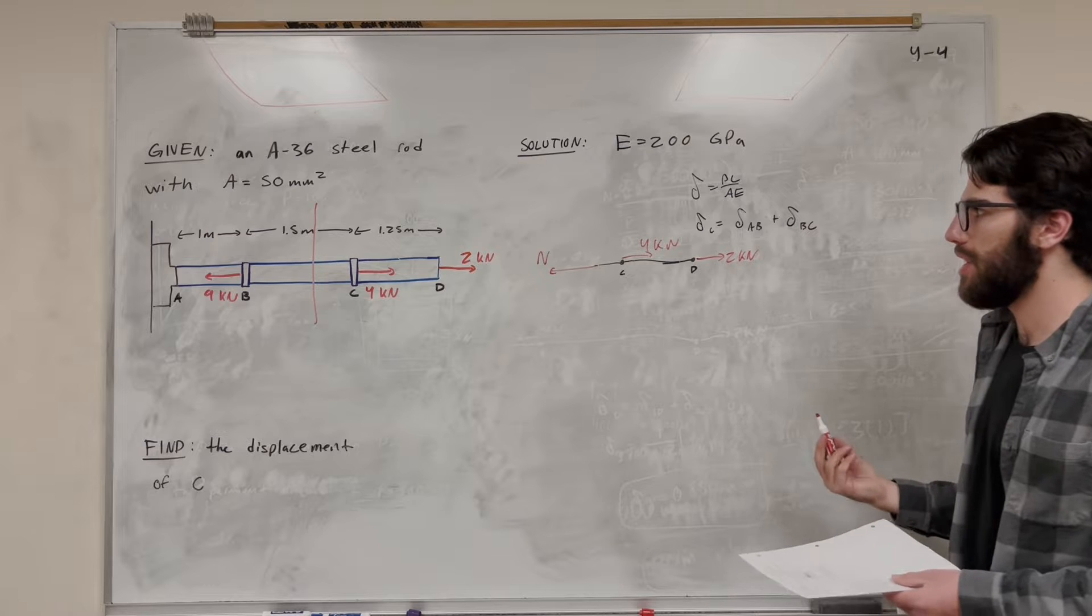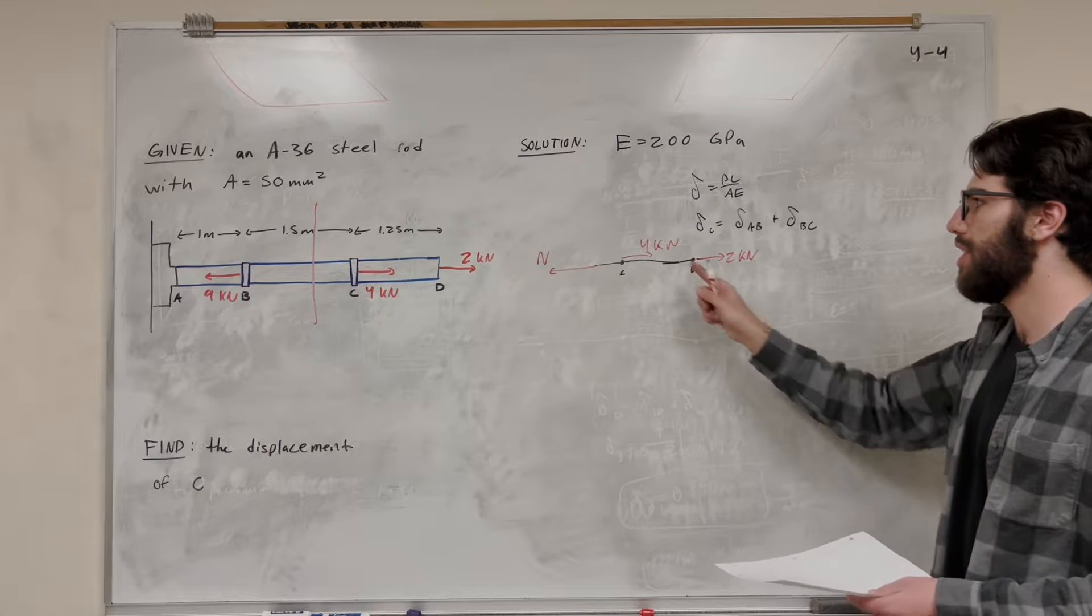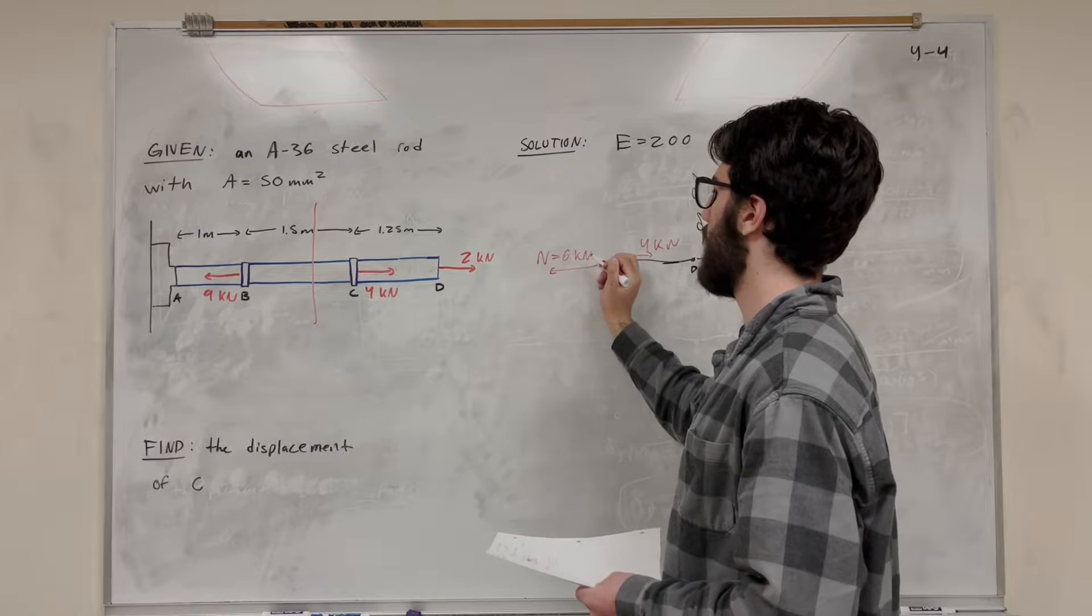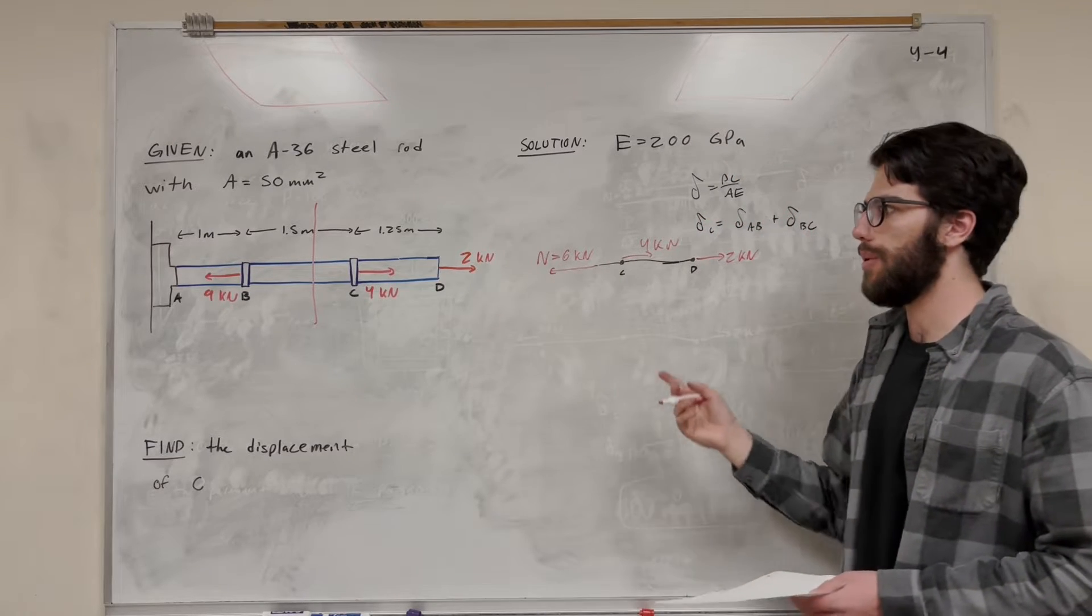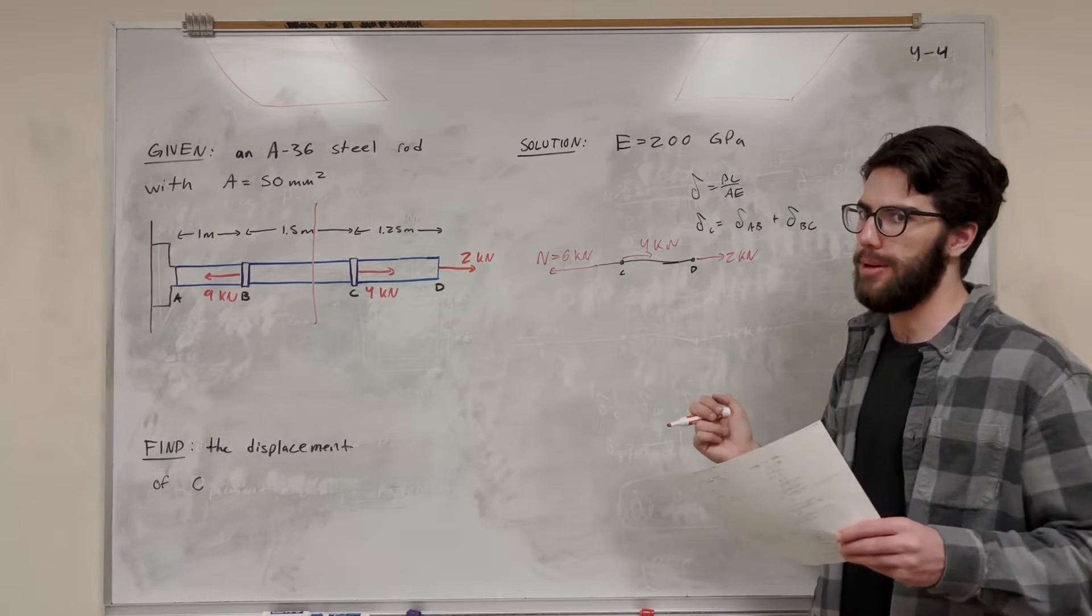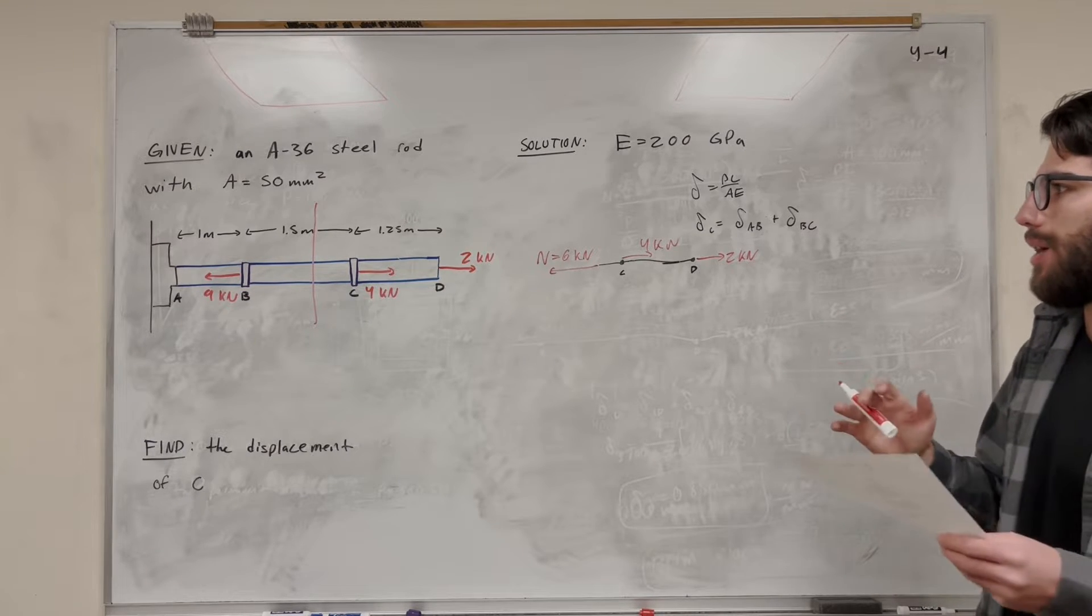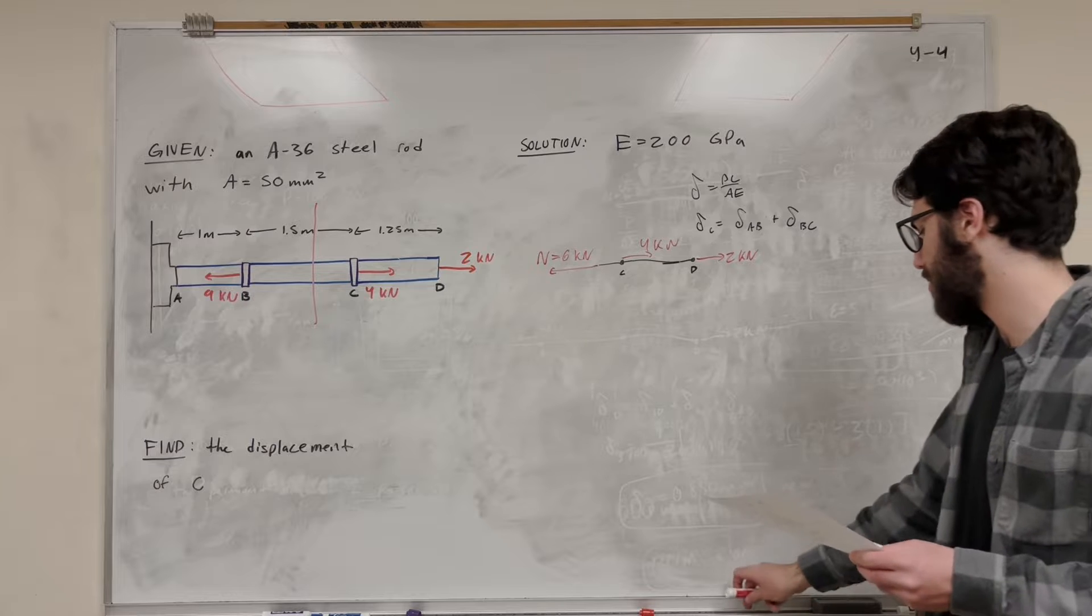So if you remember from statics, it's pretty easy. You just take sum of the forces in the X direction. You're going to find that the normal force here has to be equal to 6 kilonewtons. And it's going to be pushing to the left. Now, when the normal force is pushing outward from the beam, that means it's elongated. It's pulling away, and that pulling is going to make it want to get longer. So we're going to make sure to use a positive number for that.